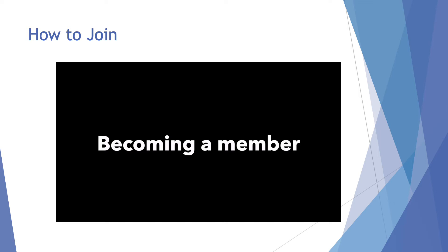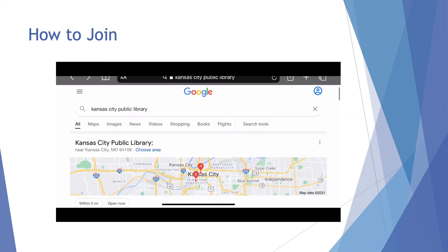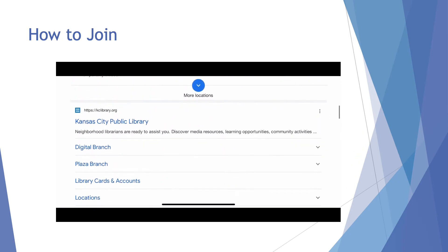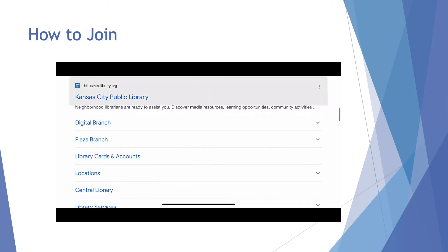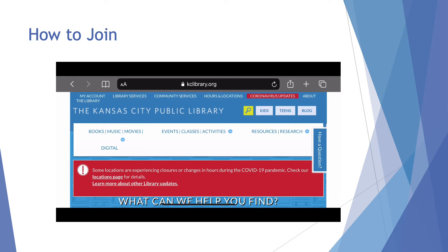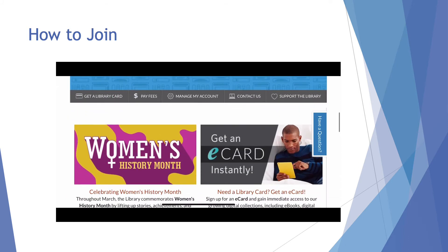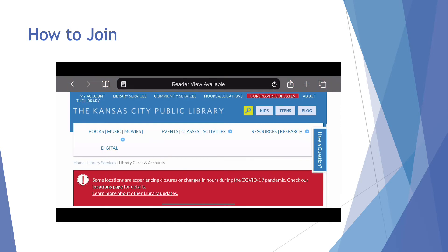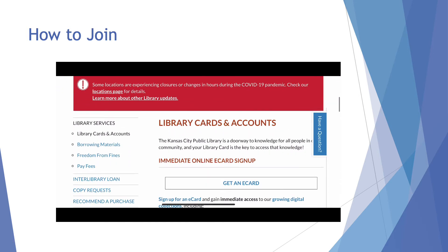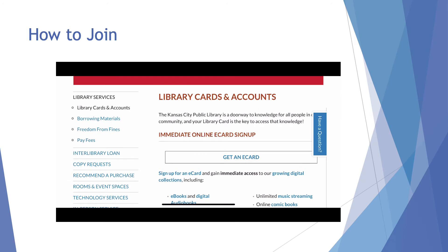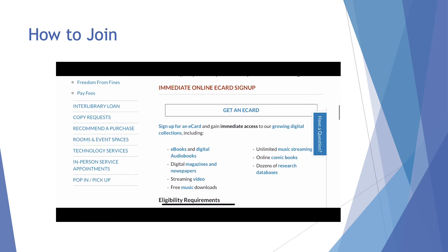Now that you've found your library, let's talk about how to join. My local library is the Kansas City Public Library, so I'm going to show you how on that site, but I've looked into other libraries in the area and it's a very similar process, so follow along. I searched it online and clicked on the first result link. On the main page, scrolling down on the far left you can see where it says 'get a library card.' You can do this whole process online. Signing up for an e-card gives you immediate access to everything you could want, including ebooks and audiobooks.